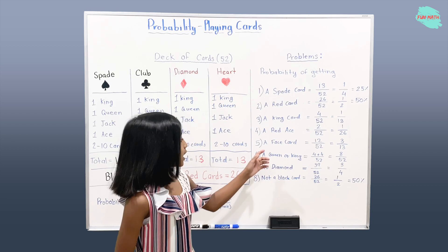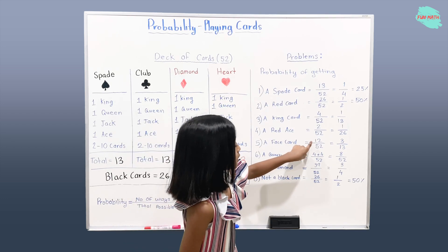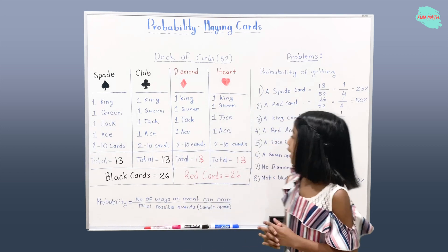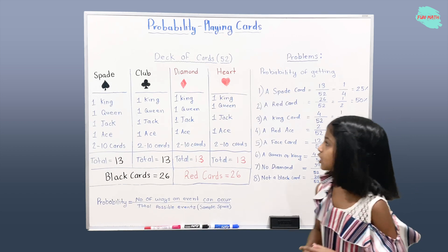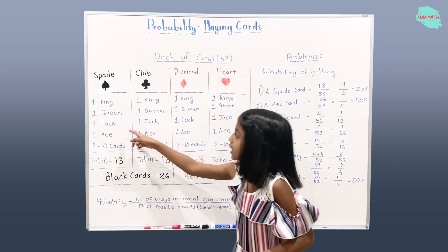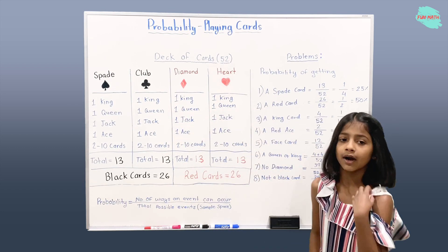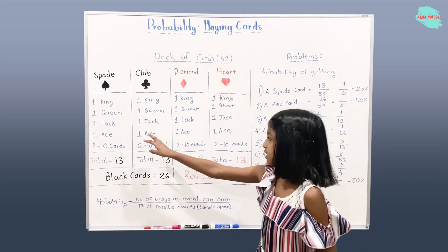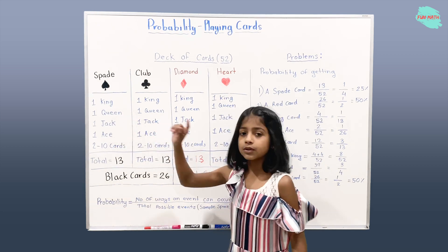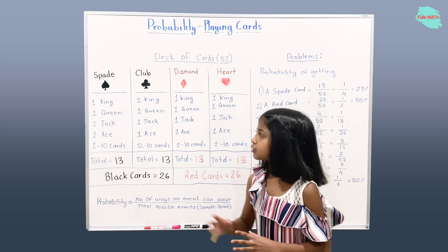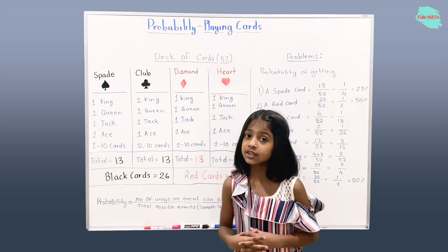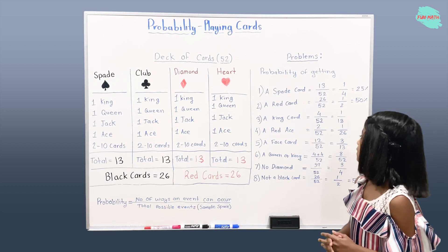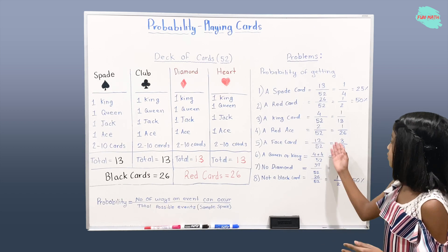Probability of getting a face card is equal to 12 over 52. We have 12 as our numerator because face cards are king, queen, and jack — that's 3 face cards per suit. In all 4 suits there are 3 face cards each, so we multiply 3 by 4, which is 12. 12 over 52 can also be written as 3 over 13.